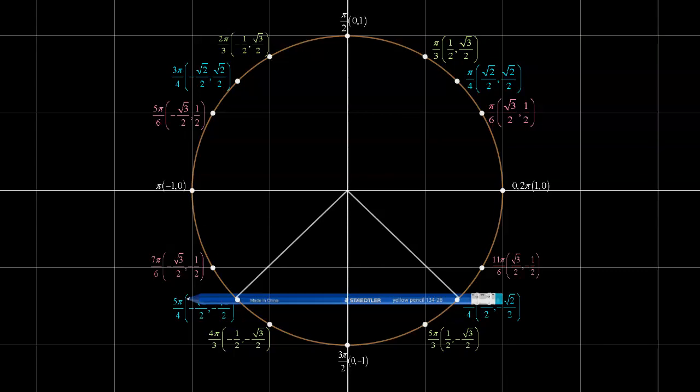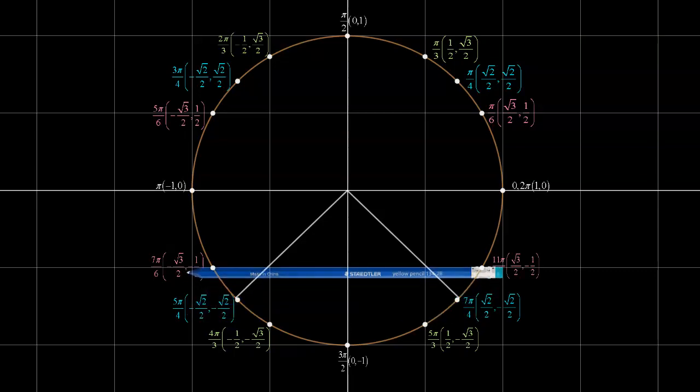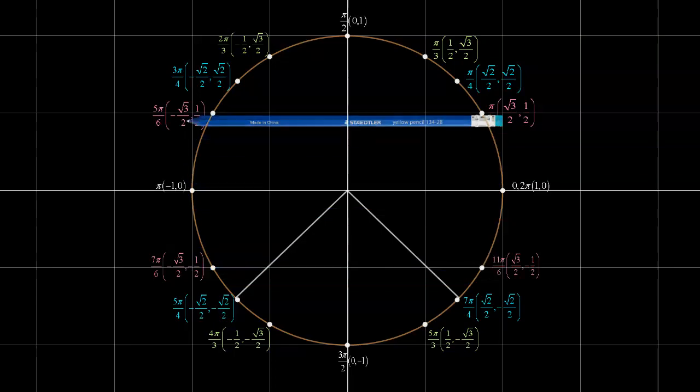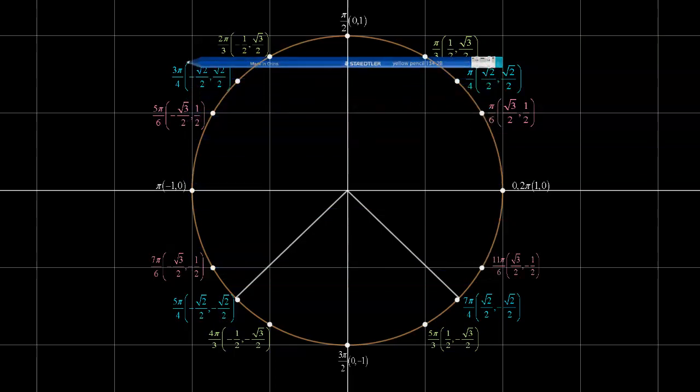And it's as simple as that. Had we been looking for, let's say, sin theta is equal to negative half, then of course I would have to adjust the pencil, and it would end up being right around here, or sin theta is equal to root 3 over 2 would be up there.